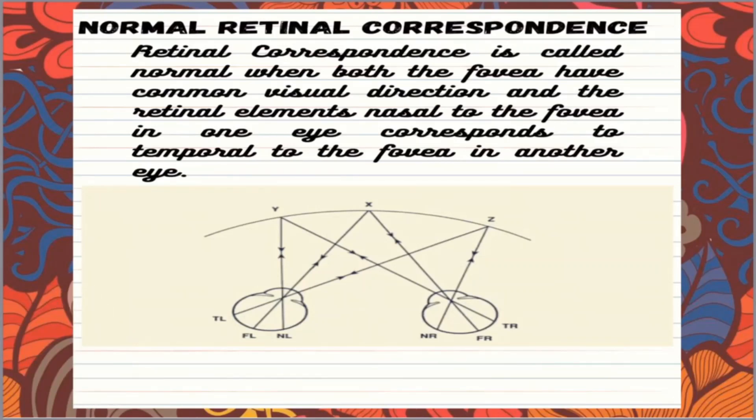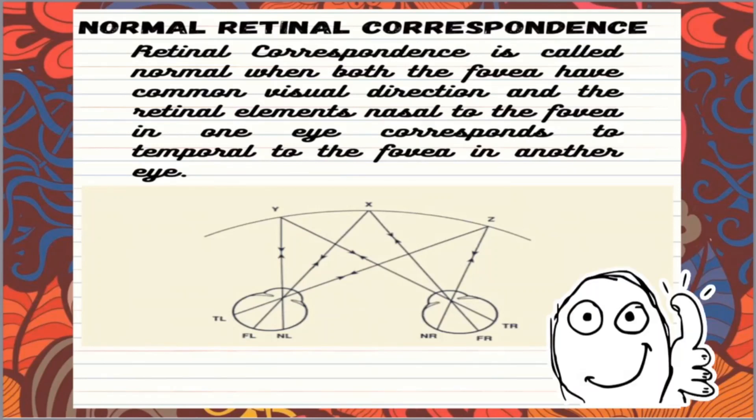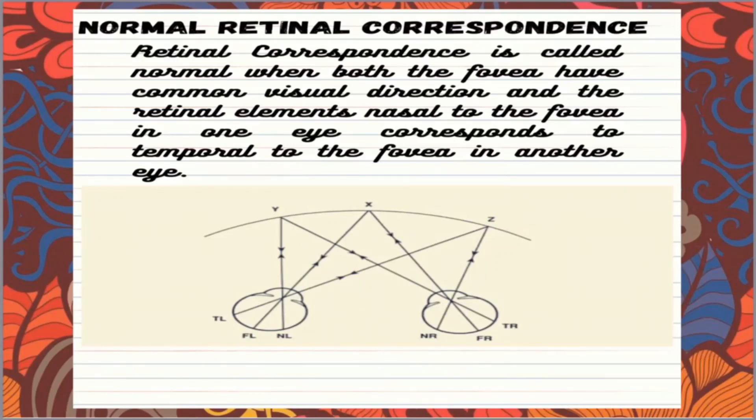Similarly, if non-corresponding points get stimulated, images will be formed but that will not be the good one. Images will be blurred or double image banegi. And it will cause barrier in binocular single vision as you must have seen in case of squint also.